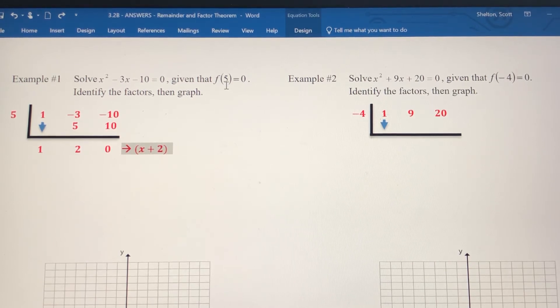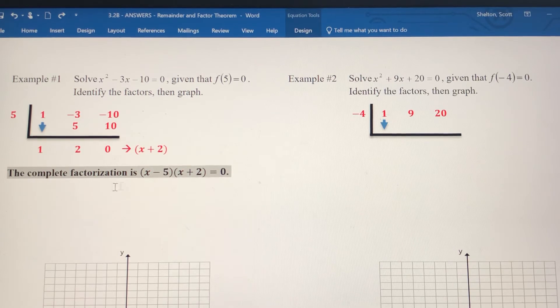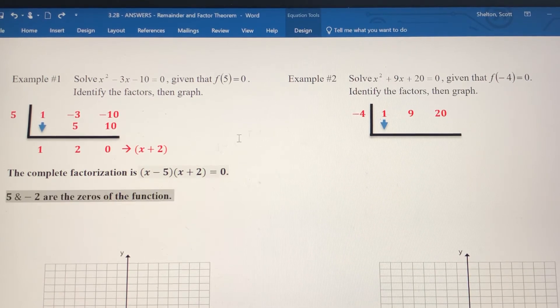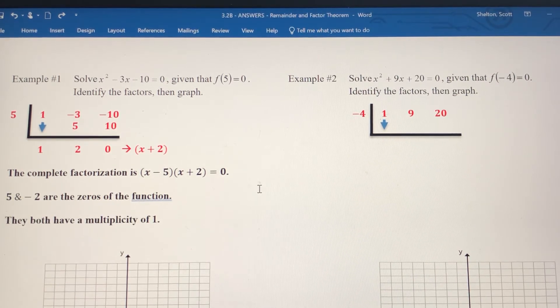Again, this zero gives us the first factor of x minus 5. The division gives us the second factor of x plus 2. So my two zeros here are 5 and negative 2. Both those factors occur once, so they both have a multiplicity of 1.